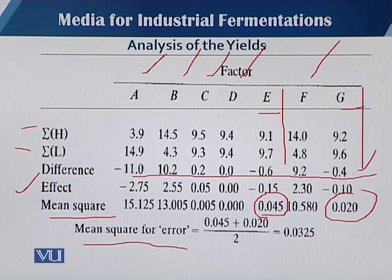By this, we have the value 0.0325 as the mean square error in this whole design.